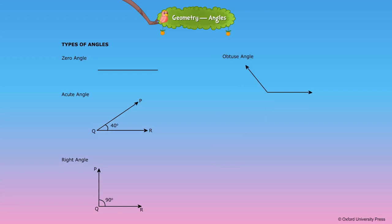Obtuse angle: An angle which measures between 90 degrees and 180 degrees is called an obtuse angle. For example, angle PQR equal to 130 degrees is an obtuse angle.